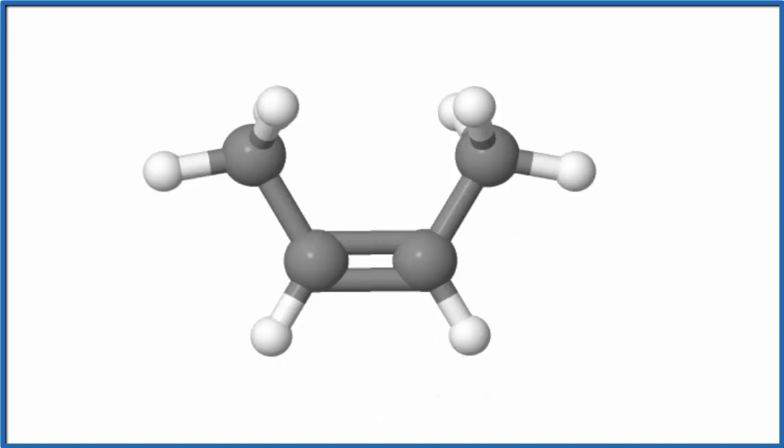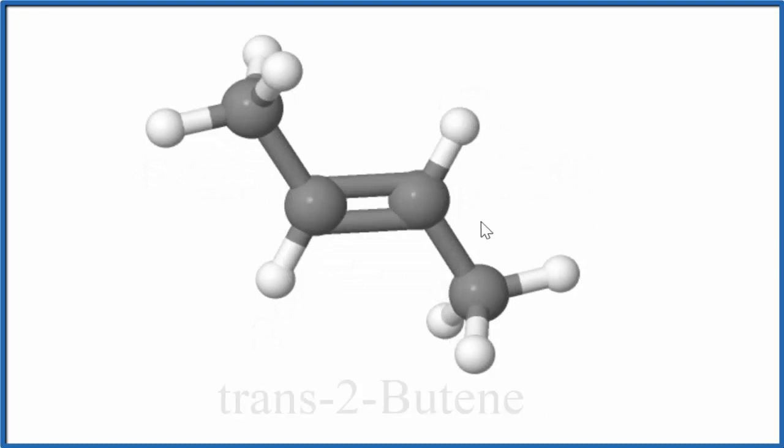For the trans isomer, we have them on opposite sides. So now there's a hydrogen here and across from it, there's a hydrogen here. Same for the methyl groups.